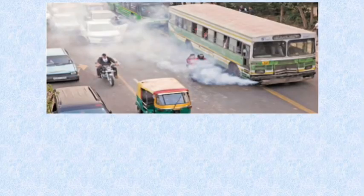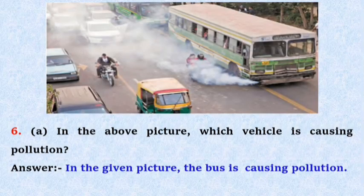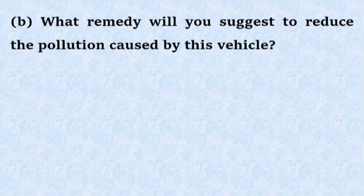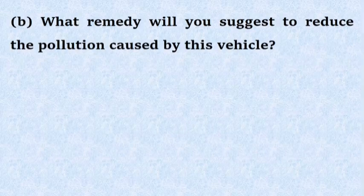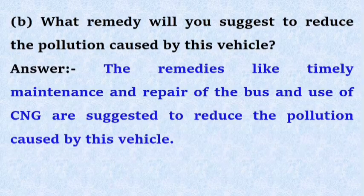Question no. 6A: In the above picture, which vehicle is causing pollution? Answer: In the given picture, the bus is causing pollution. 6B: What remedy will you suggest to reduce the pollution caused by this vehicle? Answer: The remedies like timely maintenance and repair of the bus and use of CNG are suggested to reduce the pollution caused by this vehicle.